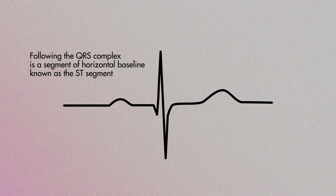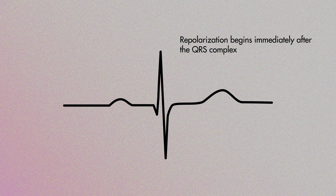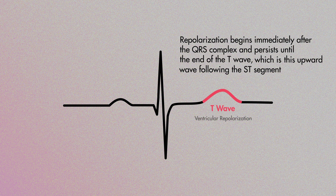Following the QRS complex is a segment of horizontal baseline known as the ST segment. This represents the initial phase of ventricular repolarization, which extends from the end of the QRS complex and persists until the end of the T wave, which is this upward wave following the ST segment.